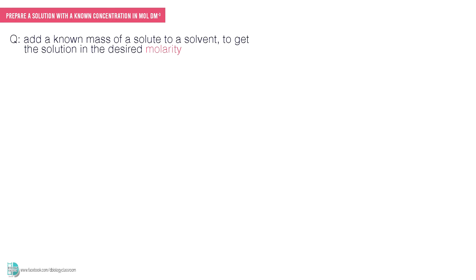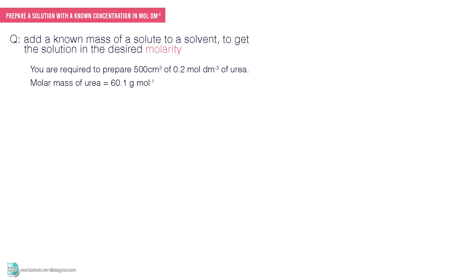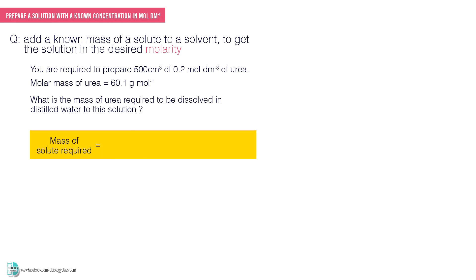In this situation, you are required to dissolve a known solute in a solvent to make a solution with a known molarity. For example, you are required to prepare 500 cm³ of 0.2 mol per dm³ of urea, where the molar mass is 60.1 gram per mol. You need to find out how many grams of urea you need to dissolve in distilled water to make this solution. The calculation is: the mass of solute required in grams equals the volume you need times the molarity you want times the molecular weight of the solute.